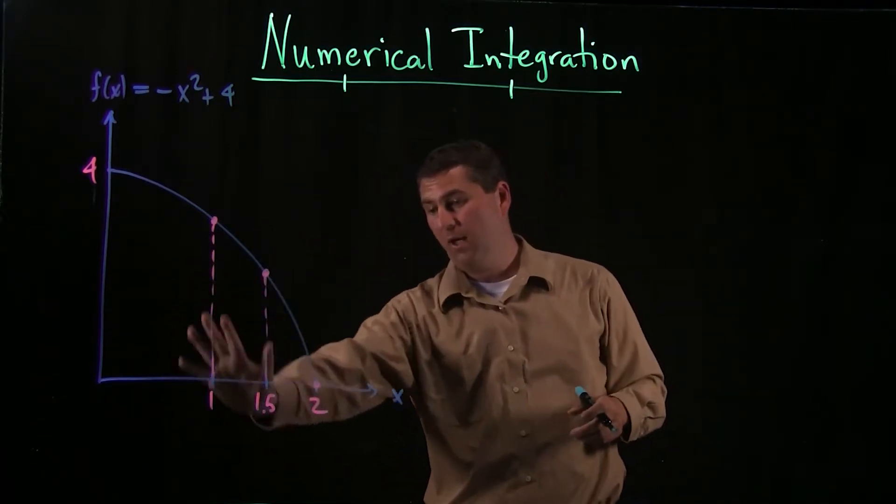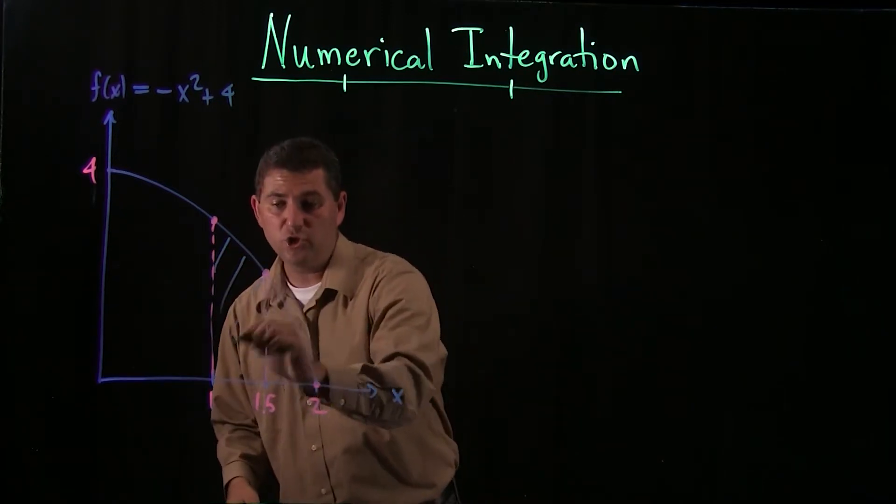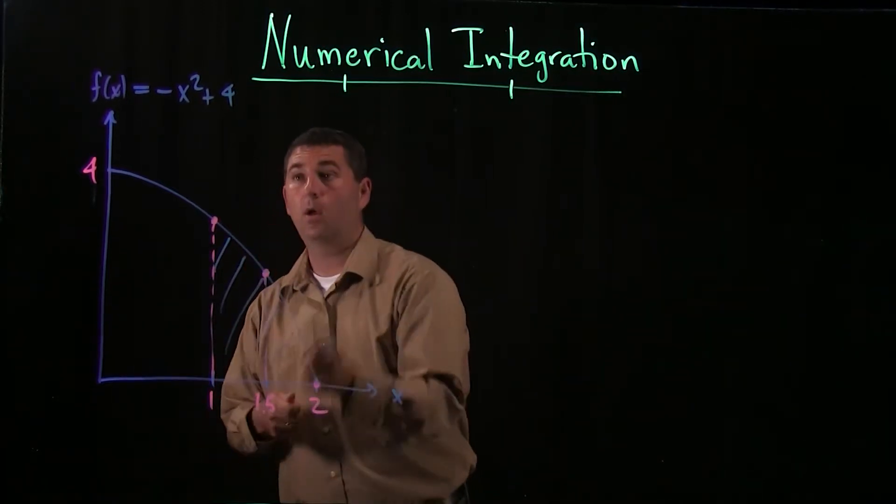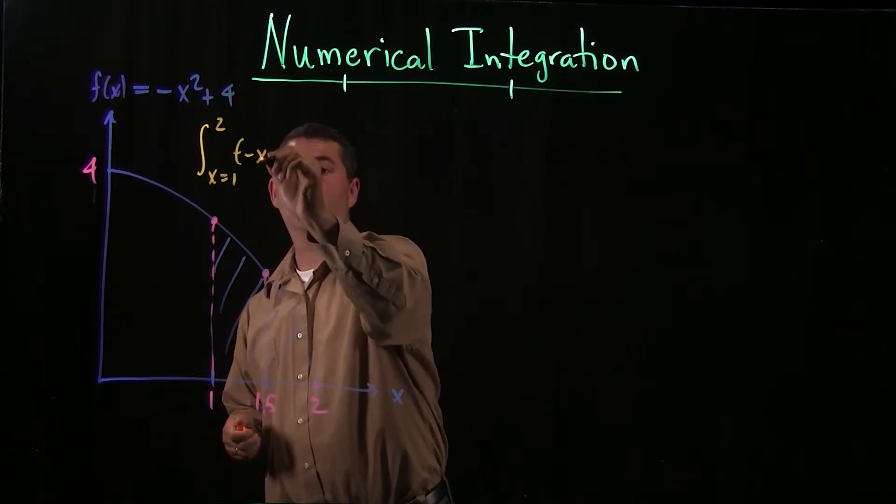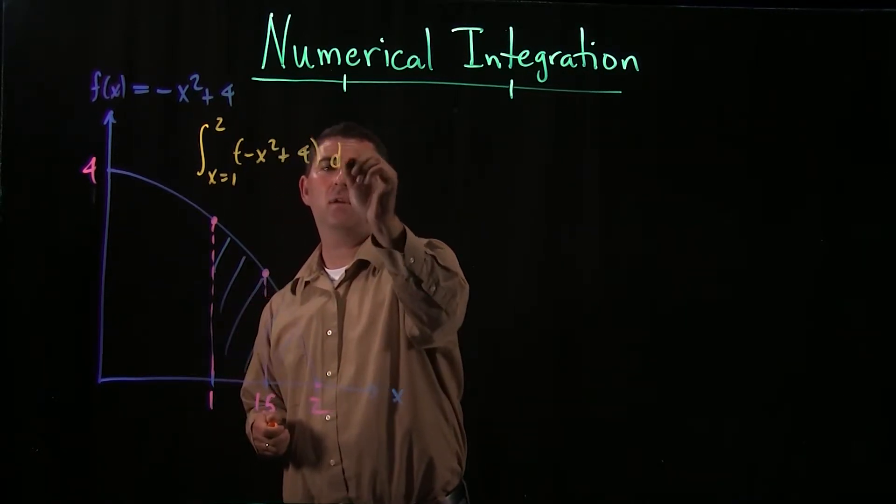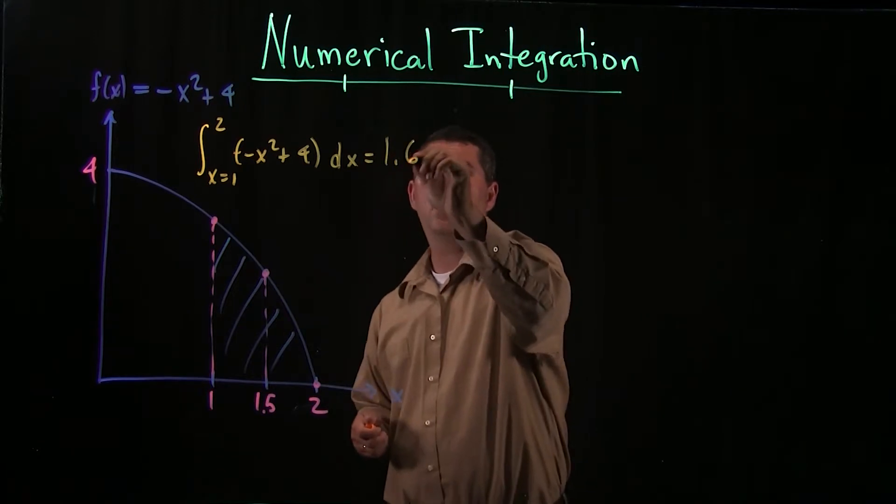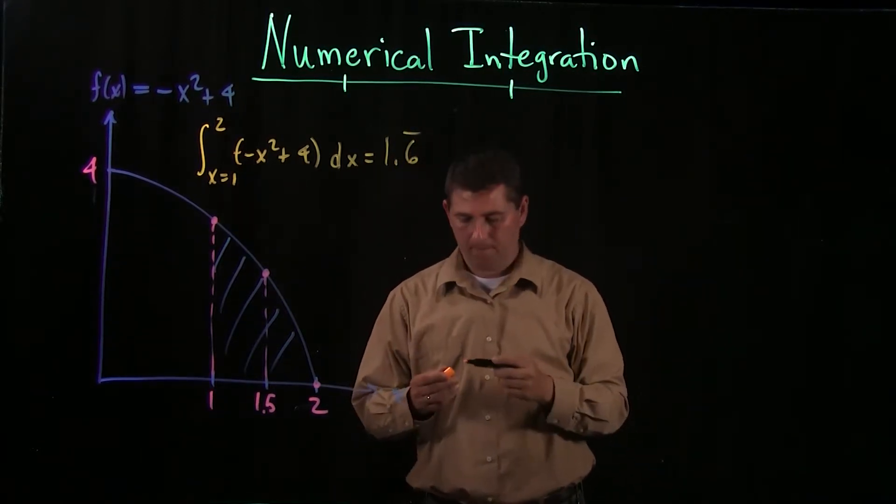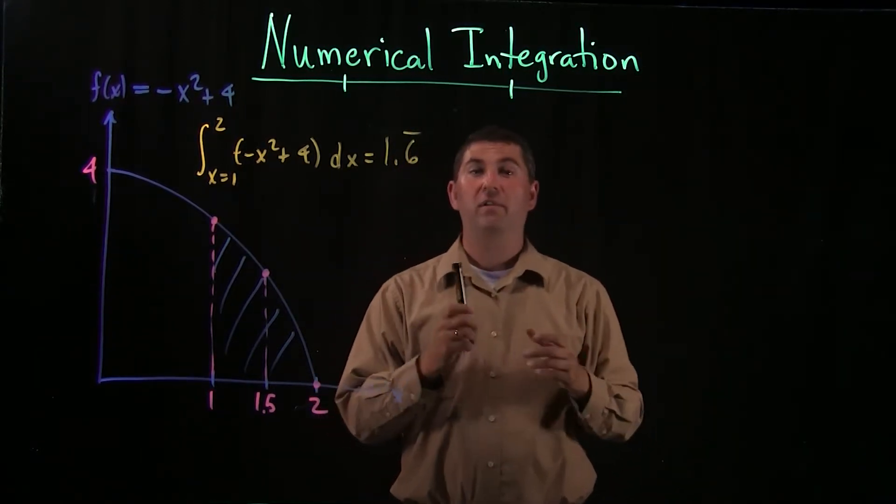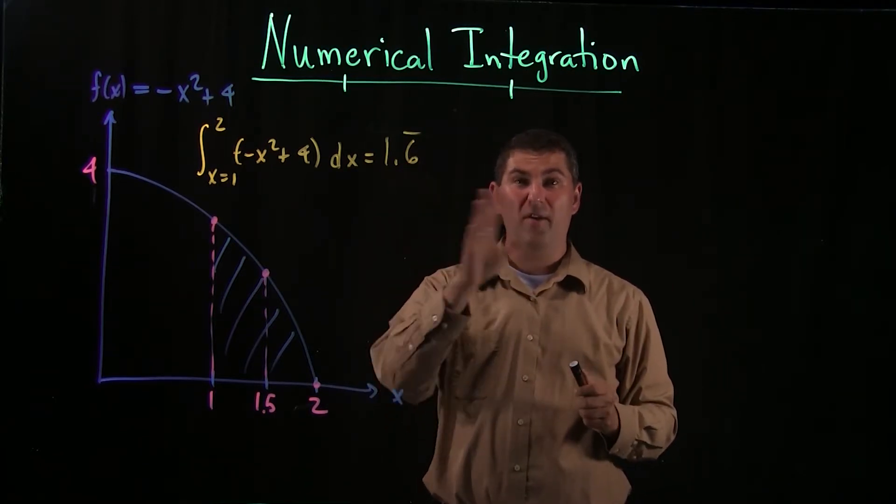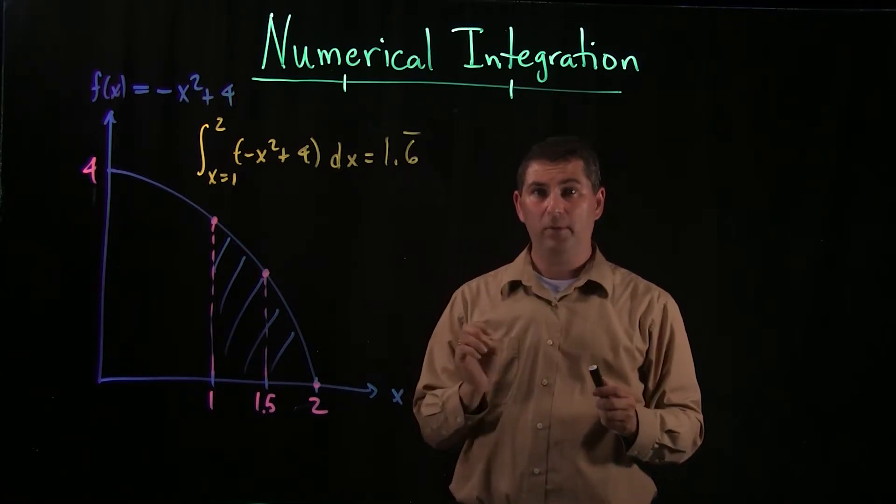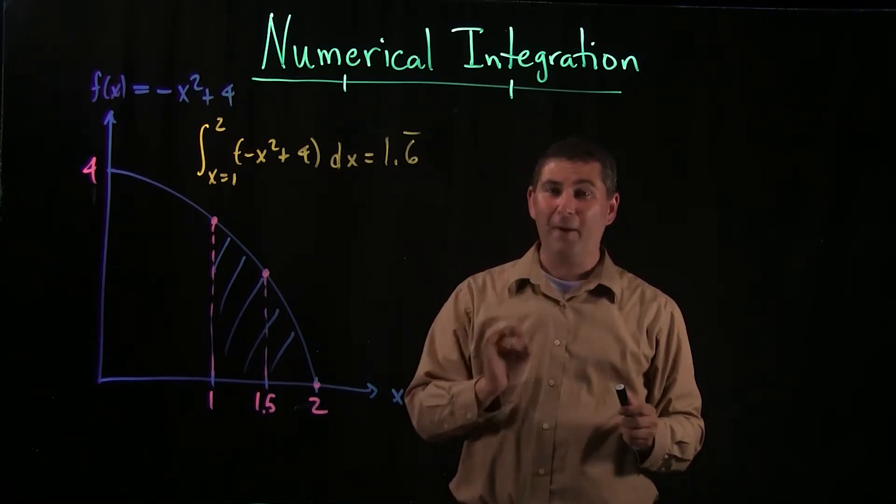We ended up saying, okay, if I wanted to know the area between 1 and 2, well, we said that if you integrate from 1 to 2, negative x squared plus 4 dx, you end up with 1.6 repeated. So we saw that if we used the midpoint rule, we were able to get pretty close to that, maybe off by about 200s or so. Let's see what happens when we use Simpson's rule.